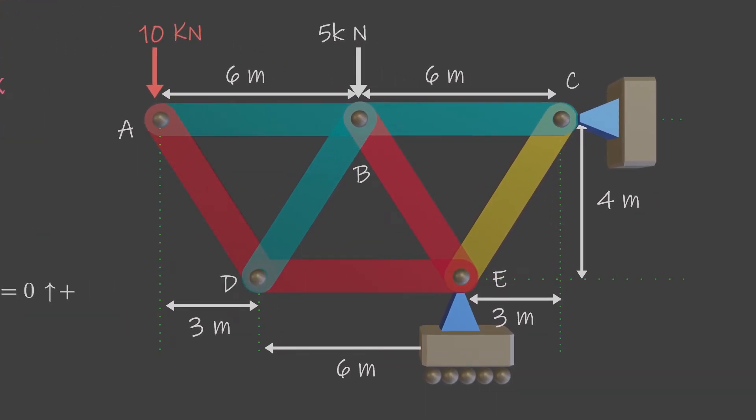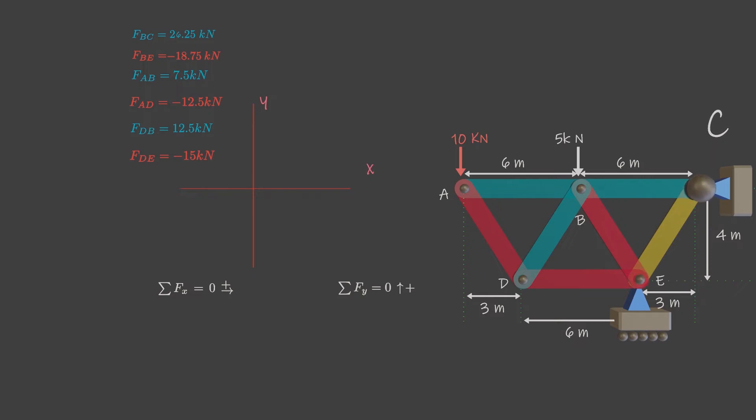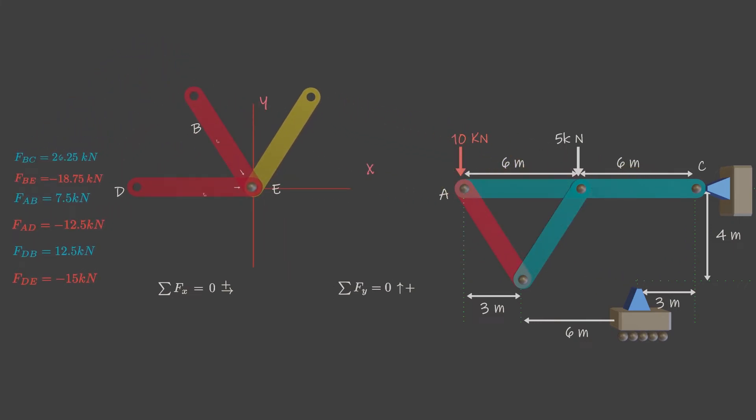Take a quick look at this truss. Right now, the only unknown force is member CE. You can isolate joint E or joint C to determine the unknown force. Let's isolate joint E. Draw the known force vectors with their known magnitude and direction. We again assume the unknown force's in tension. There is also unknown reaction force caused by a roller support. Don't forget about it. Let's assume it acts downward, that is, away from the joint. Now solve these force vectors. Member CE will be in compression.